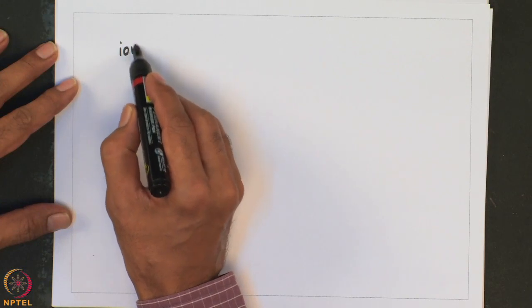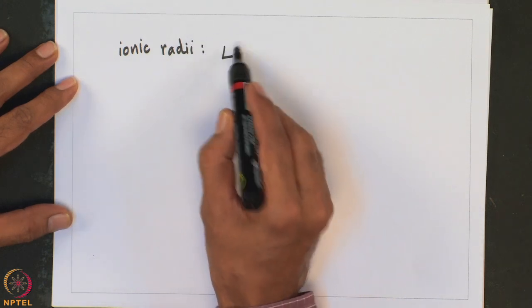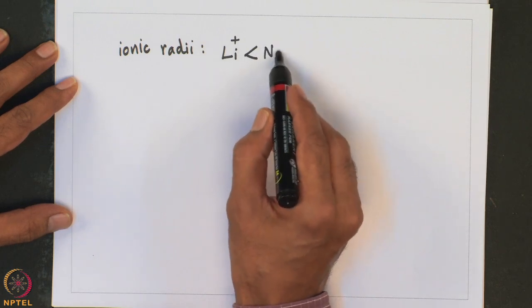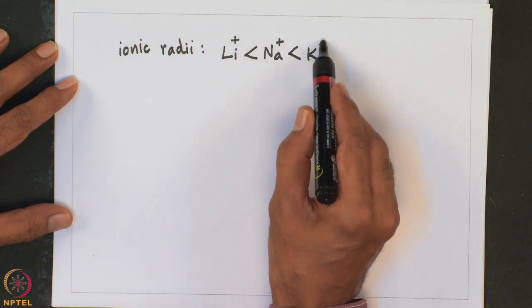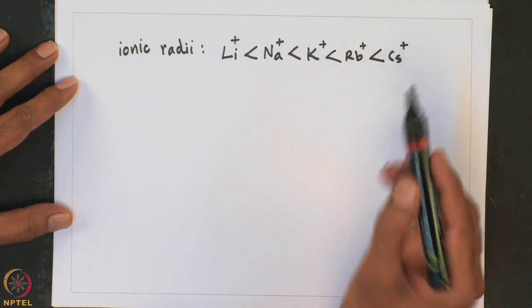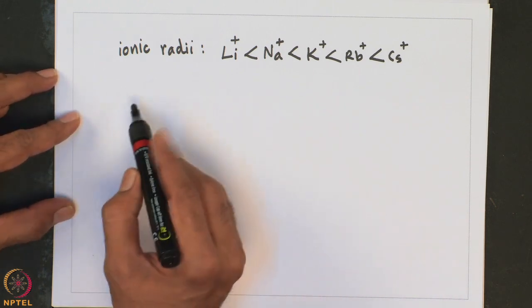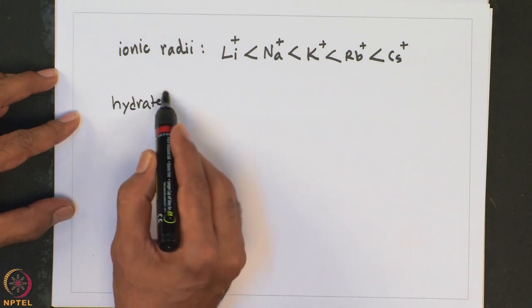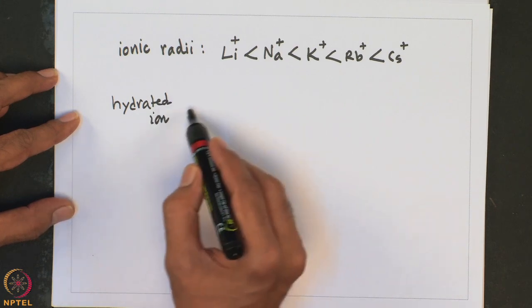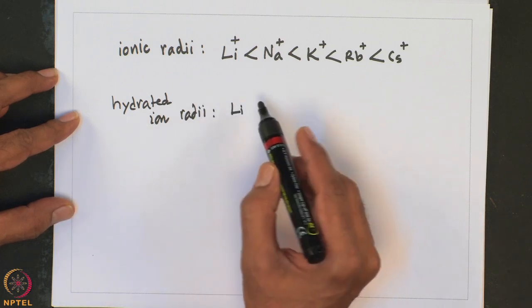Let me begin with a question. Let us look into the ionic radii of group 1 elements — it follows a certain order. Now let us also look into the hydrated ion radii of group 2 elements, which follows a different, exactly opposite trend.